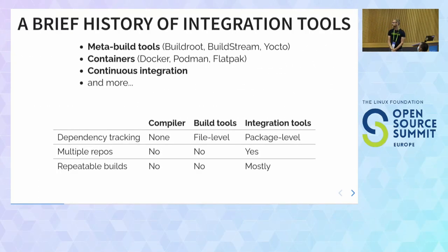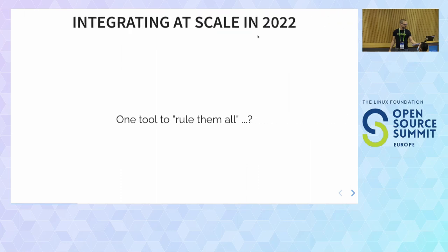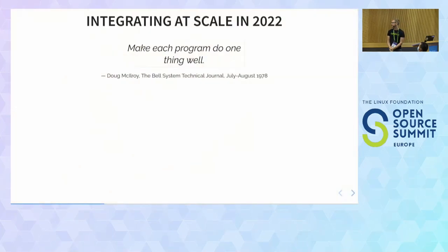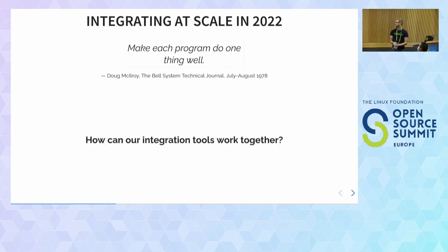Fast forward to today — there's been loads more innovation: meta build tools, containers and container build tools, continuous integration. Everything's solved, right? But what I've realized is there isn't one tool that solves all the problems a software integrator might have. Let's go back to the 1970s Unix philosophy of one program doing one thing well, and ask: how can the existing tools work together?